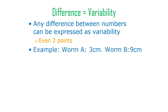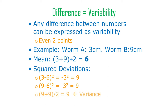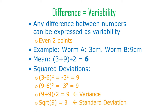As an example, we've got worms: worm A is 3 centimeters long and worm B is 9 centimeters long. The mean of three and nine is six. We take the deviations of those numbers from their mean and square them. For the 3 cm worm, three minus six squared equals nine. For the 9 cm worm, positive three squared is also nine. So the variance is nine, and the standard deviation — the square root of nine — is three.